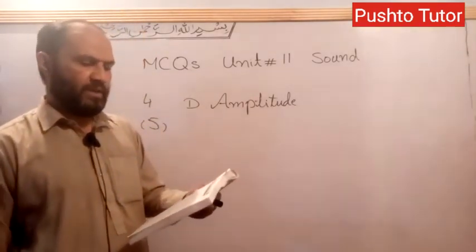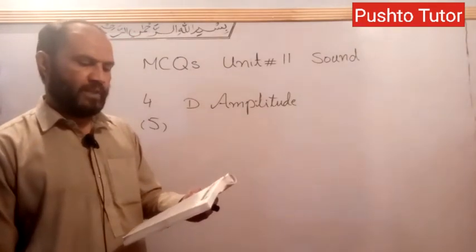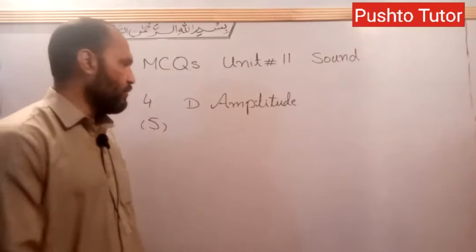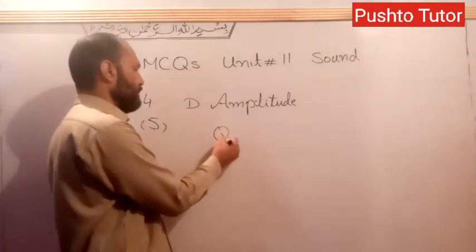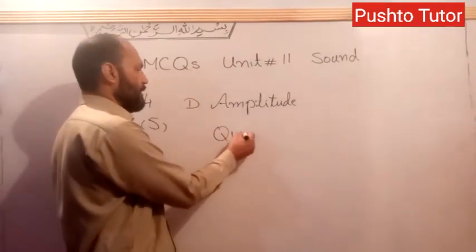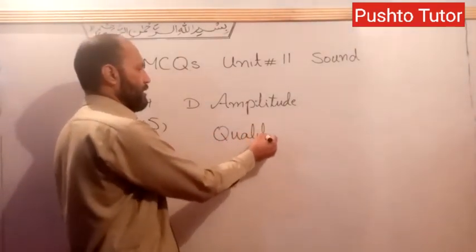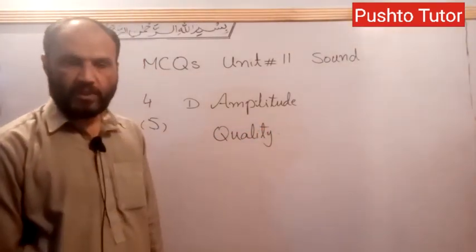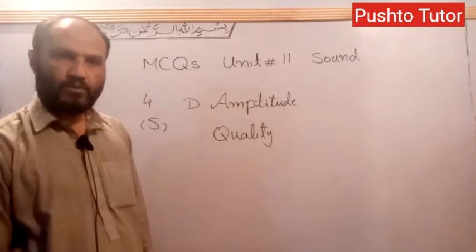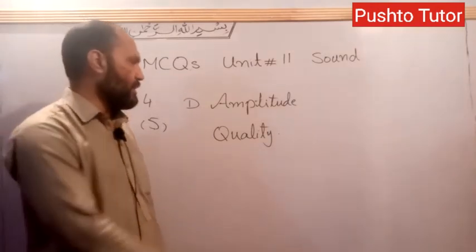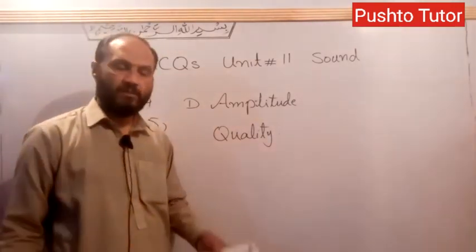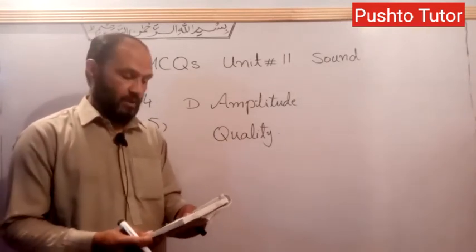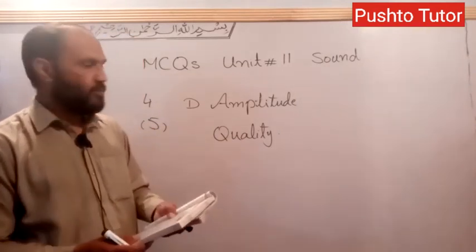Question number 5: Various instruments sound different even when they play the same note due to difference in — the answer is quality (timbre). The quality is the characteristic property of sound. Using quality, we can differentiate between two sounds. Quality is a key property of sound, and there are three types of sound properties — this is the value of quality.